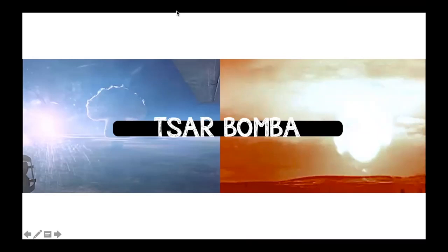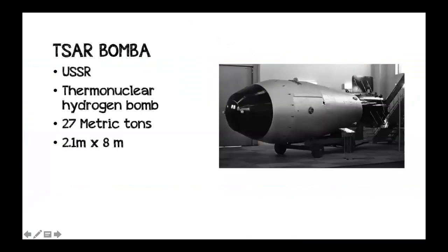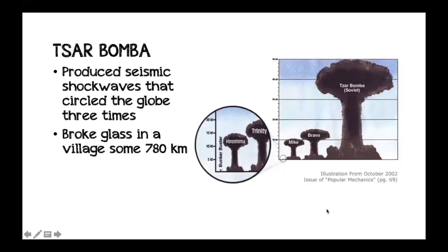Speaking of large man-made explosions, the largest man-made explosion was the detonation of the thermonuclear hydrogen bomb known as the Tsar Bomba, developed by the USSR during the Cold War arms race against the United States. The bomb weighed over 27 metric tons and measured 8 meters by 2.1 meters. It was released at a height of 10.5 kilometers and detonated at 4 kilometers, producing energy worth 50 megatons of TNT. The resulting shock waves circled the globe three times, breaking glass in a village 780 kilometers away, and caused radio communication interference for about 40 minutes.